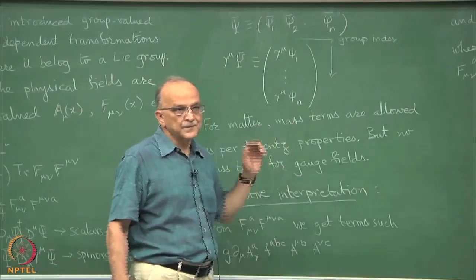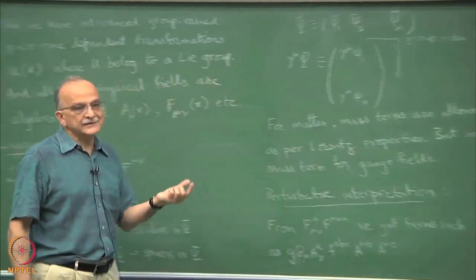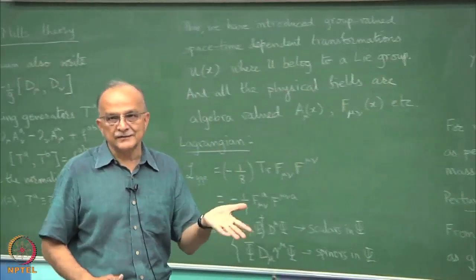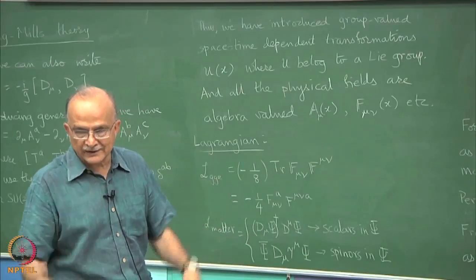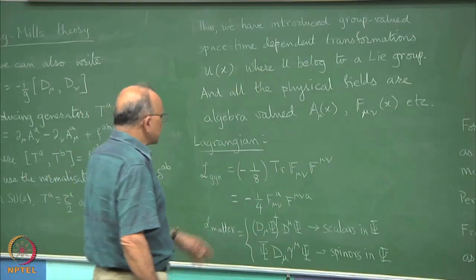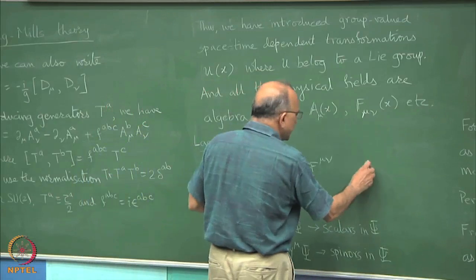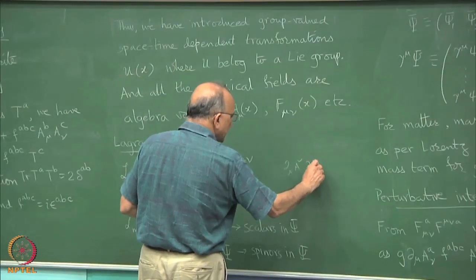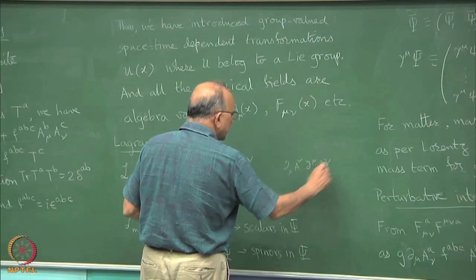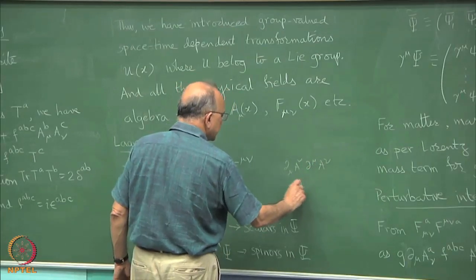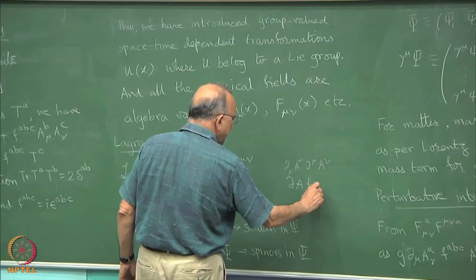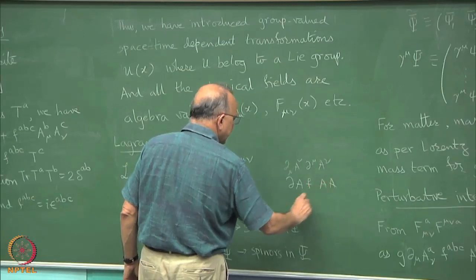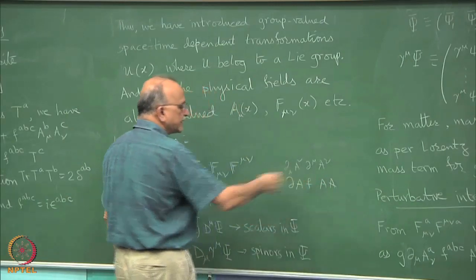You cannot separate them. By kinetic term we mean things that are just square of derivative. But along with d mu A mu d mu A mu you will automatically also get stuck with stuff like this which is all non-linear in A.